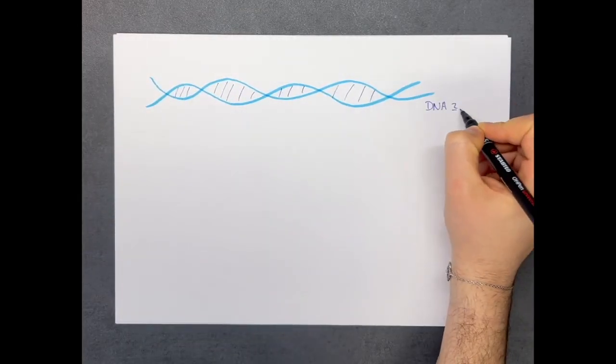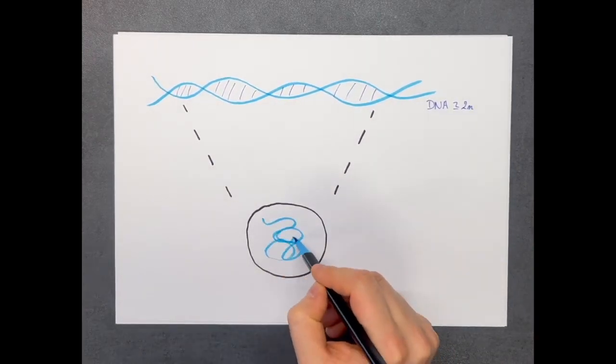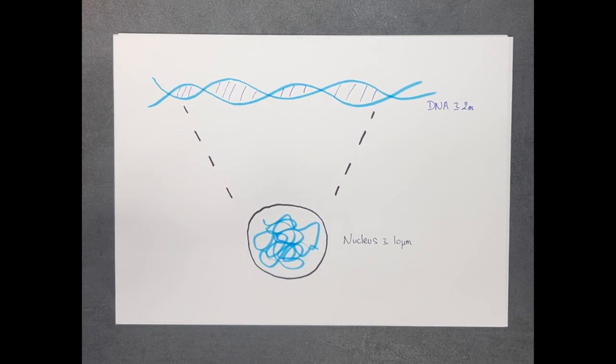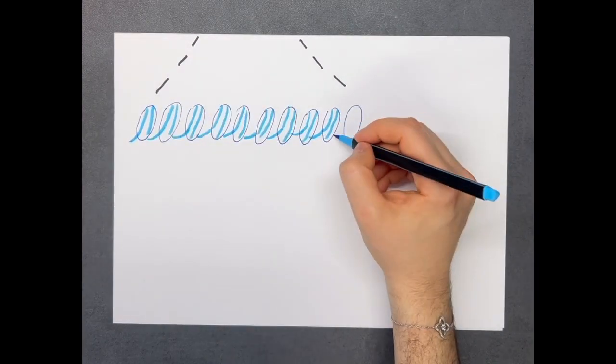Our 2m long DNA is strongly packed within a tiny cell nucleus of about 10 µm diameter. To reach such level of compaction, the DNA is wrapped around scaffold protein to form a structure called the chromatin.